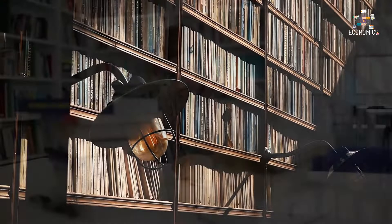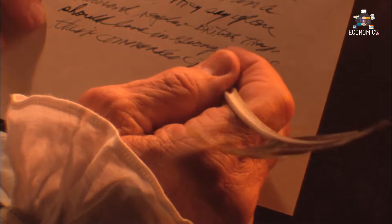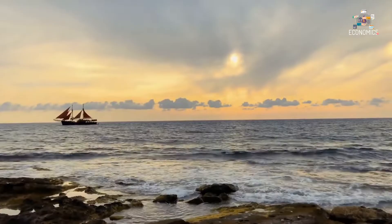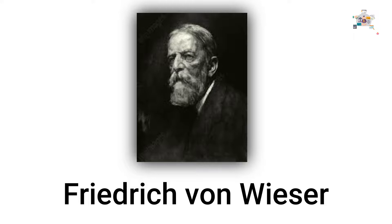The Austrian school is a heterodox school of economic thought adapted to methodological individualism — the concept that social phenomena result exclusively from the actions and motivations of individuals. The school originated in the late 19th and early 20th century Vienna with Eugen Böhm von Bawerk, Karl Menger, Friedrich von Wieser, and more.